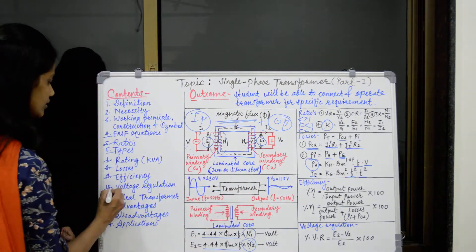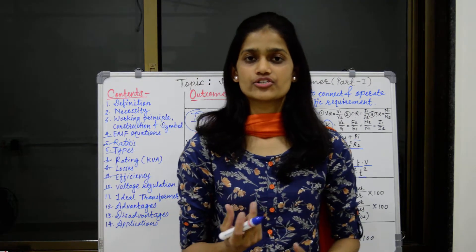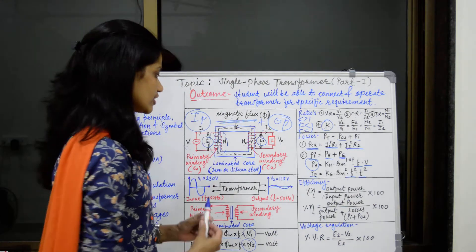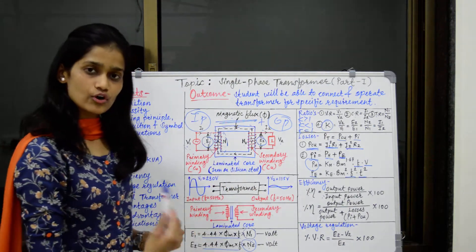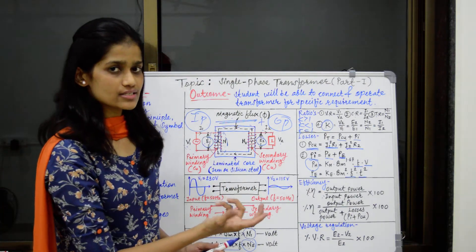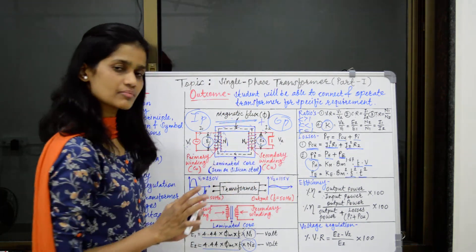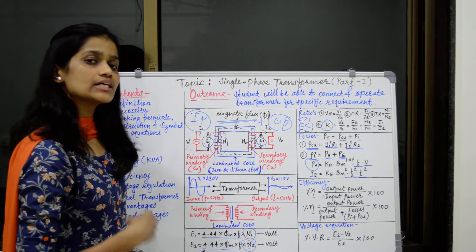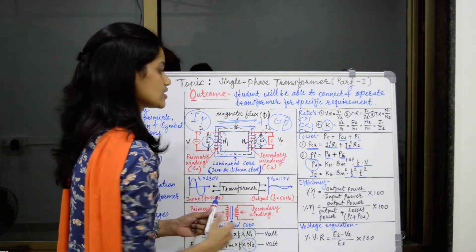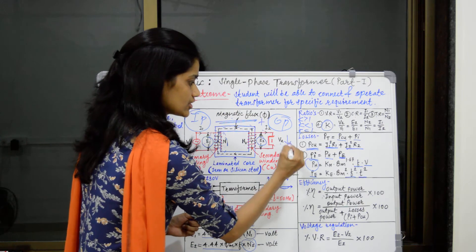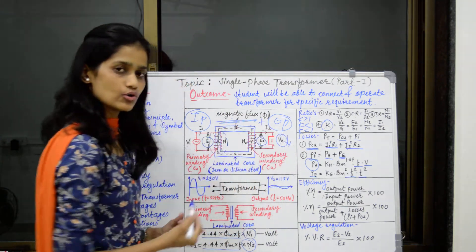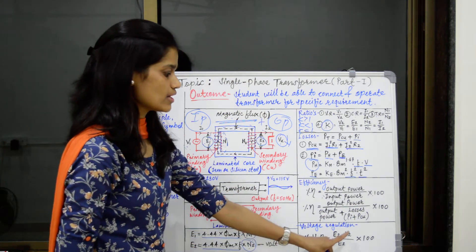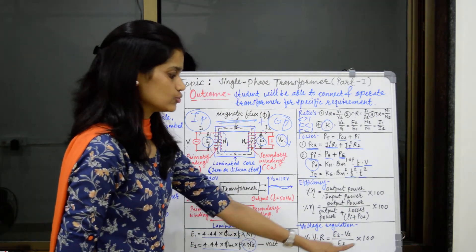Next is voltage regulation. Regulation means change. Ideally, when we increase the load of the transformer, the load current increases but the secondary terminal voltage must remain constant. But practically, when we increase the load, current increases and there is a small decrease — a small change — in the secondary terminal voltage. This is nothing but voltage regulation, and it is found as: (E2 − V2) / E2 × 100.